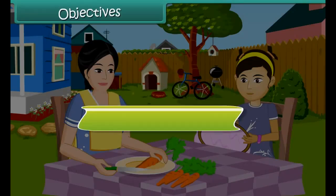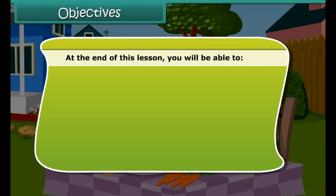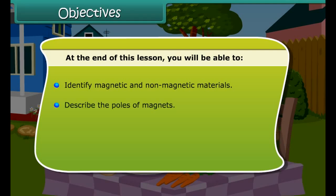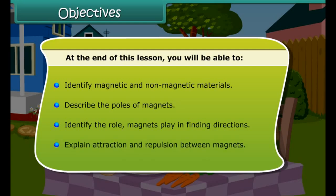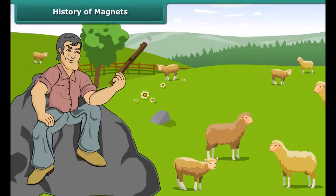Objectives. At the end of this lesson, you'll be able to identify magnetic and non-magnetic materials, describe the poles of magnets, identify the role magnets play in finding directions, and explain the property of attraction and repulsion between magnets.